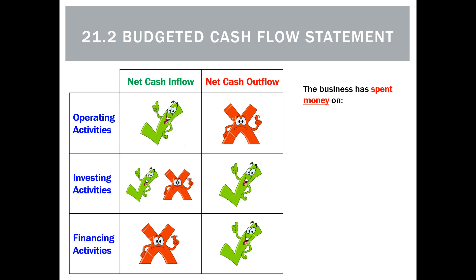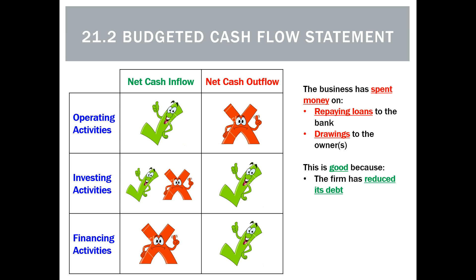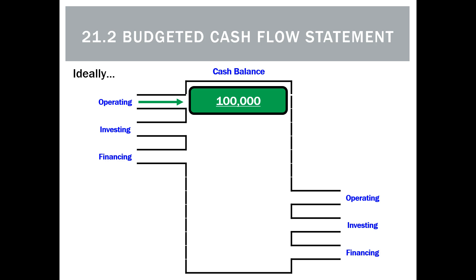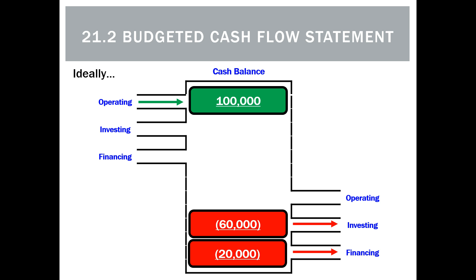A net cash outflow from financing is actually good — it means money has been spent paying back loans or making drawings to the owner. If done correctly and in proportion, this means lower debt, lower interest, and the owner is making money from the business. Ideally, we should have net cash inflows from operating of say $100,000, use that on net cash outflows from investing of $60,000 in non-current assets, and net cash outflows in financing of $20,000, leaving $20,000 as a buffer in our bank account.